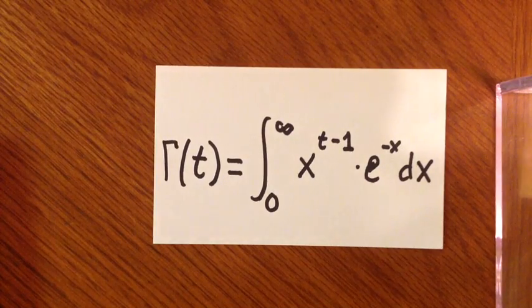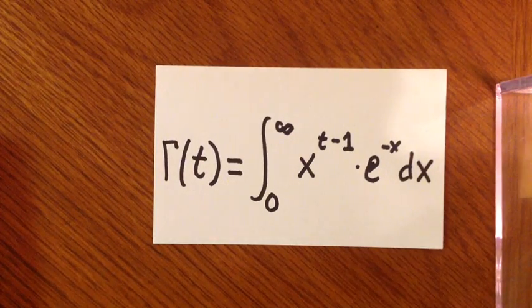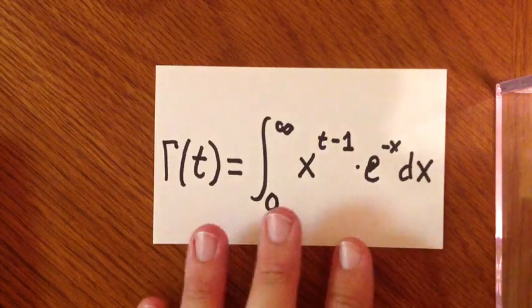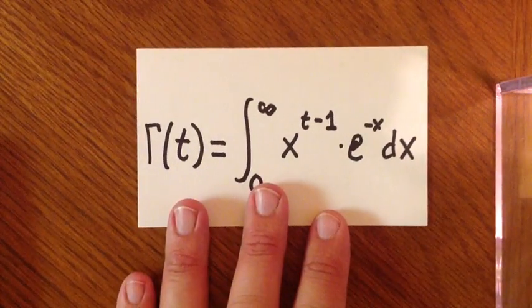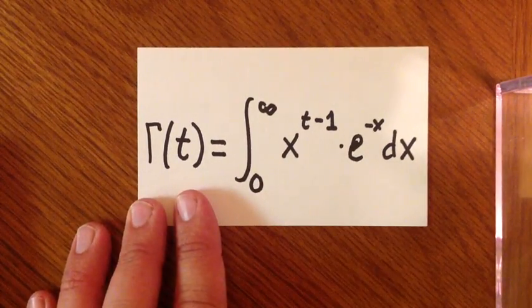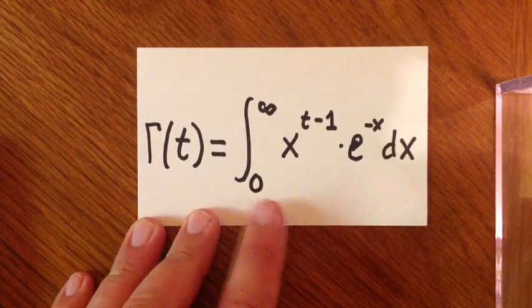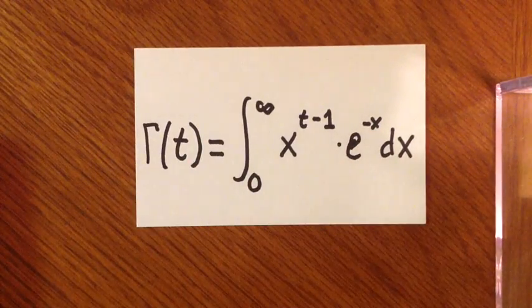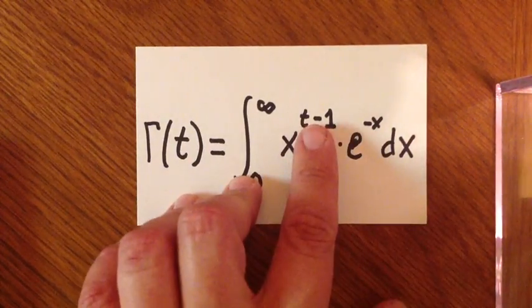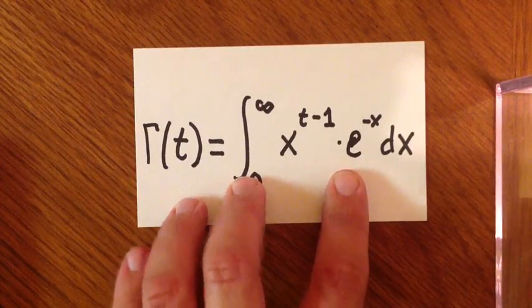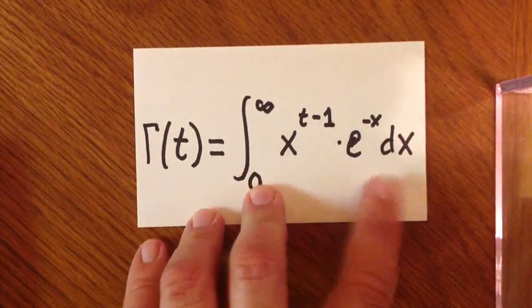This applies to scientific calculators that have the integral function, and by definition, the gamma of any real number t is the integral from 0 to infinity of x to the power of t minus 1, times e to the negative x dx.